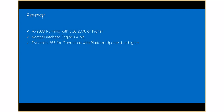The patch for Dynamics 365 for Operations is only applicable for Platform Update 4. If you are running Platform Update 5 or higher, you do not need to apply this patch. If you are on earlier versions such as Platform Update 3, 2, or the initial version, you do not have a patch available — you have to upgrade at least to Platform Update 4 to be able to interact with the AX2009 migration tool.